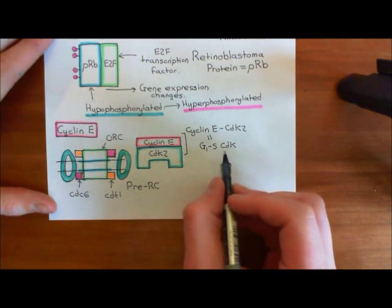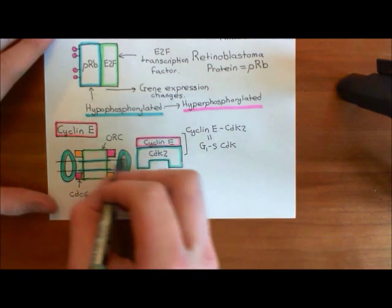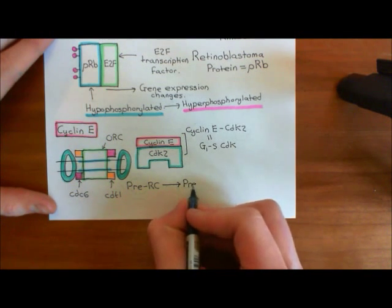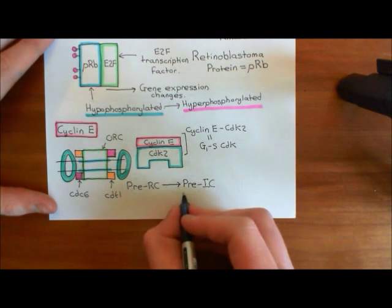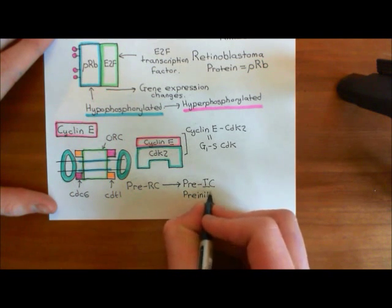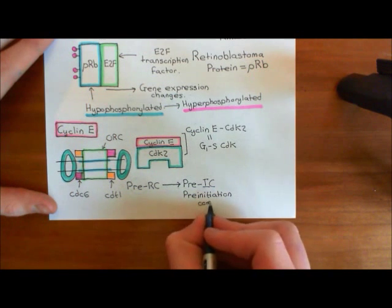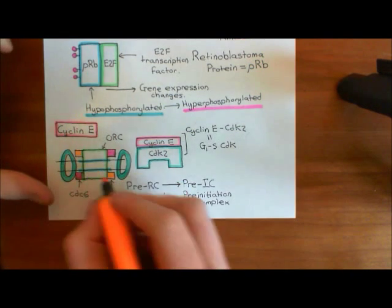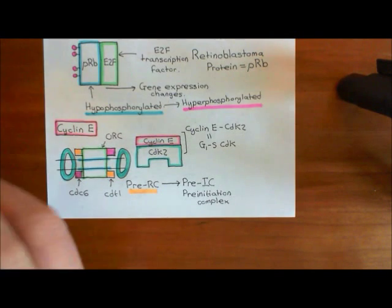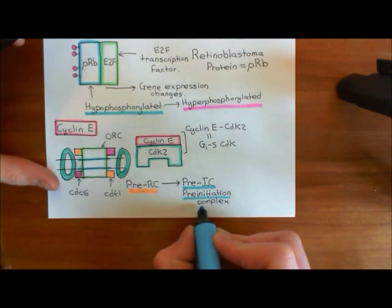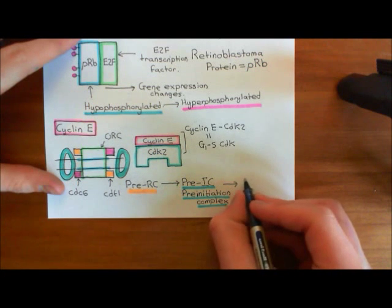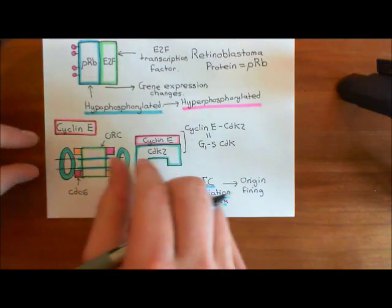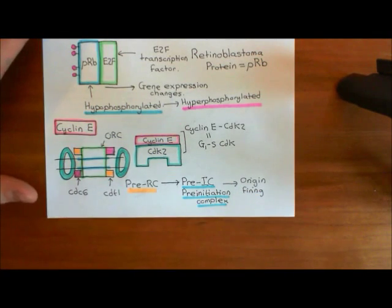When the G1S CDKs form at the G1-S transition, a whole bunch of other proteins add into the pre-replicative complex, forming a larger complex known as the pre-initiation complex, or pre-IC. Upon activation of the cyclin E-CDK2 complexes, the pre-replicative complexes are transformed into pre-initiation complexes, and these then fire — a process known as origin firing — involving DNA polymerase enzymes progressing in either direction away from the origin of replication, synthesizing new complementary strands of DNA. This is the commencement of DNA replication.